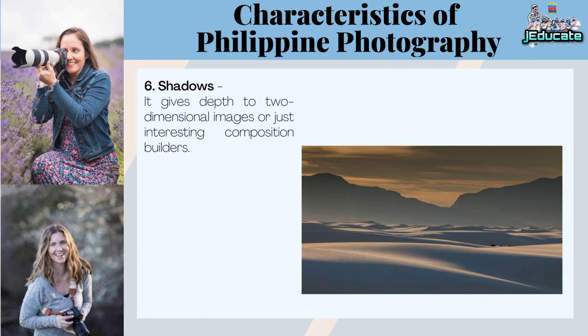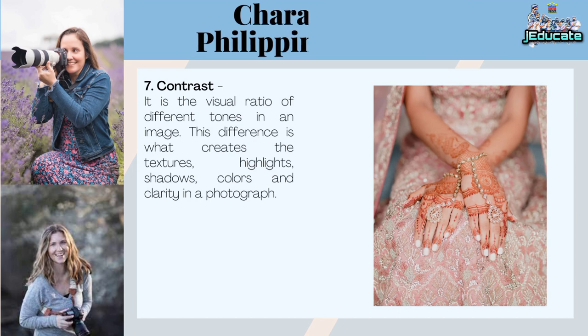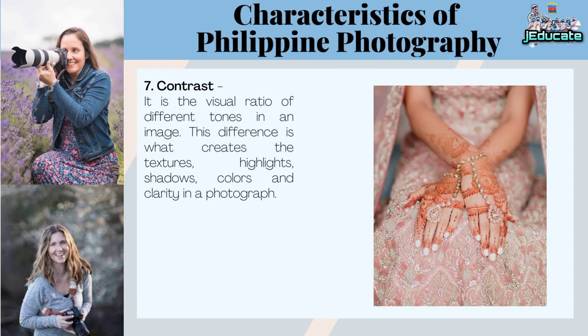Number 6: Shadows. Shadows give depth to two-dimensional images and are interesting composition builders. Number 7: Contrast. It is the visual ratio of different tones in an image. This difference is what creates the textures, highlights, shadows, colors, and clarity in a photograph.